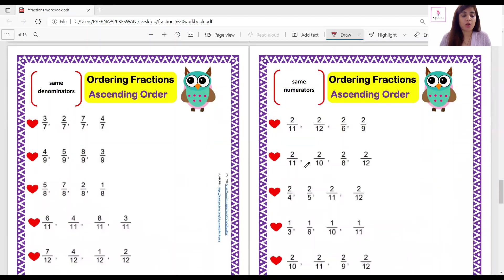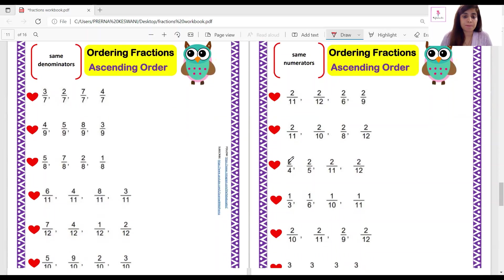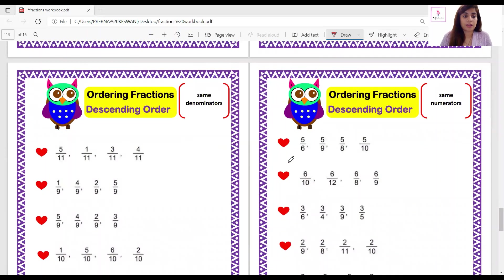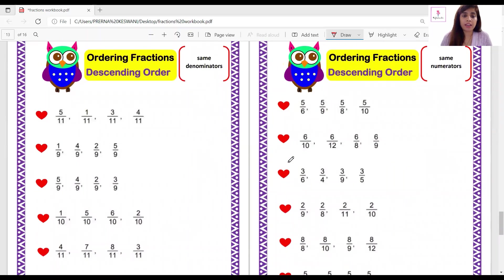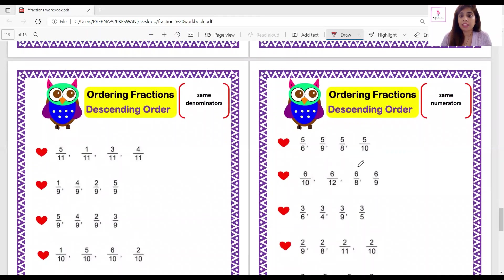Next we have ordering fractions in ascending order, again with the same denominators, and the next page has the same numerators. Next is descending order, again with the same denominators in the first page, and the next page has the same numerators.